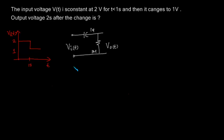This question was asked in instrumentation. The input voltage v(t) is constant at 2 volts for t less than 1 second, and then it changes to 1 volt. We are asked to find out what is the output voltage 2 seconds after the potential changes from 2 volts to 1 volt.